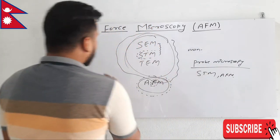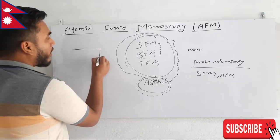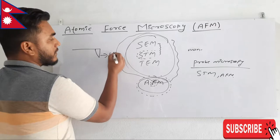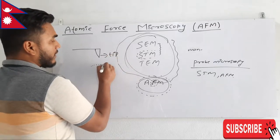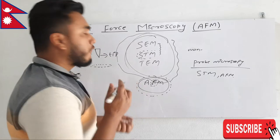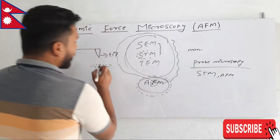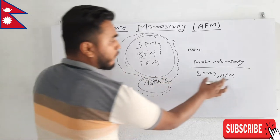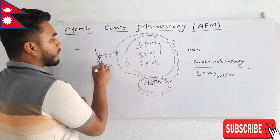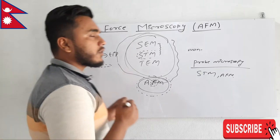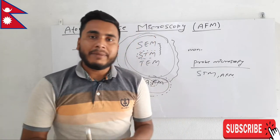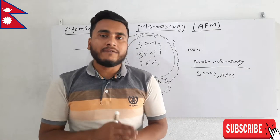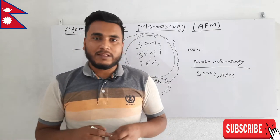In probe microscopy, we use a probe or tip near the sample and measure some kind of force. In scanning tunneling microscopy, we used tunneling current between them. But in atomic force microscopy, we measure the force between them — that is, attractive force or repulsive force — and by measuring that force we can characterize the sample and obtain topographic information and more.